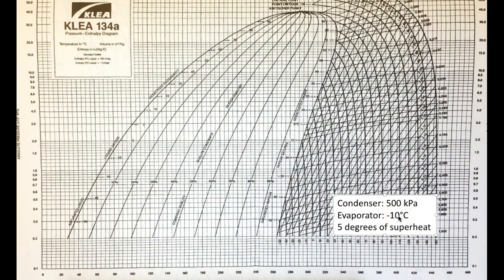Let's get started drawing this diagram. Keep in mind that we may not be able to draw the entire length of a line right away, because we may not know where it starts and ends. We may know its placement in terms of pressure or temperature, so we get lines started and then find additional information to determine their beginning and end points. Let's start with the condenser line.